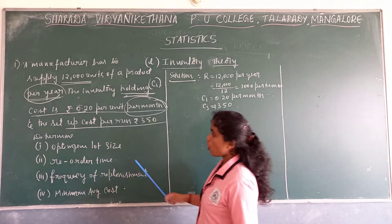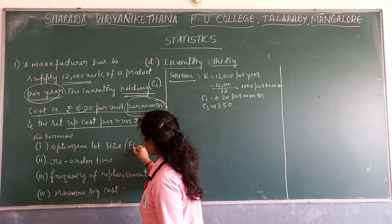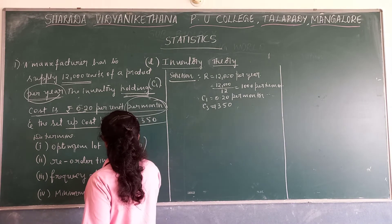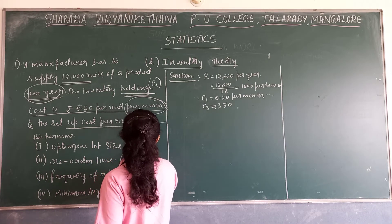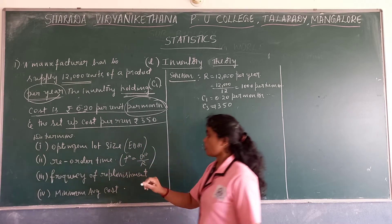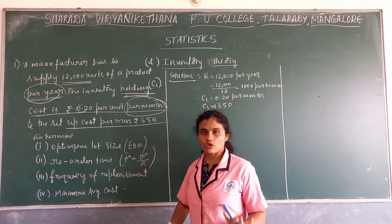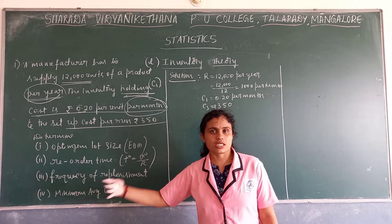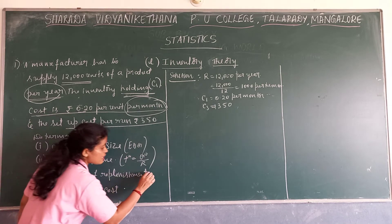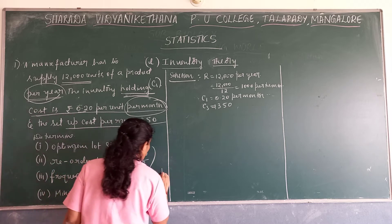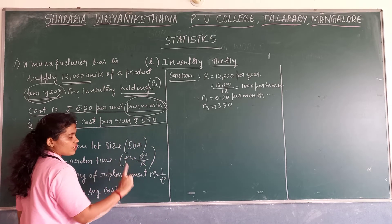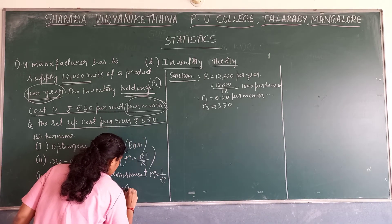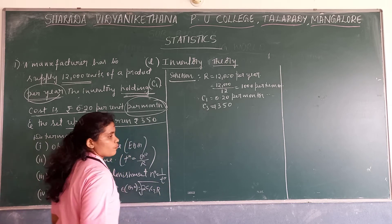Now, we need to determine: optimum lot size, which is EOQ; reorder time, which is T0, using the formula E0 divided by R; frequency of replenishment, which is N0, using the formula 1 divided by T0; and minimum average cost, using the formula: 2 times the square root of C1 times C3 times R divided by N0. Be thorough with these first four model 1 formulas.